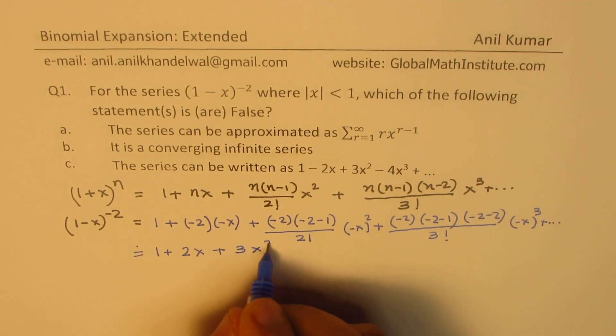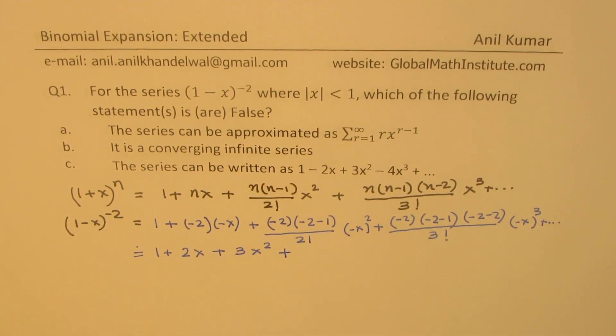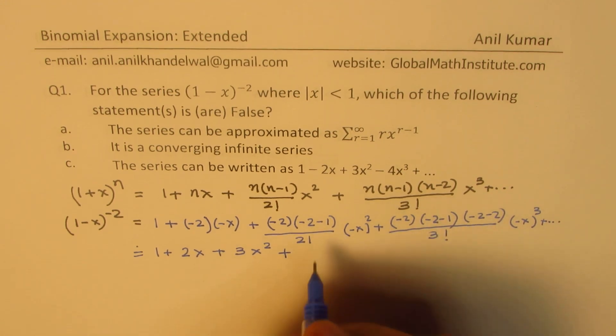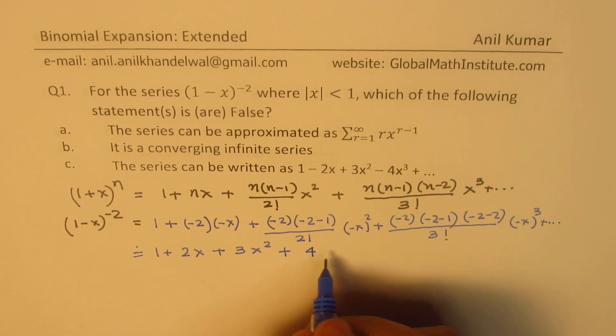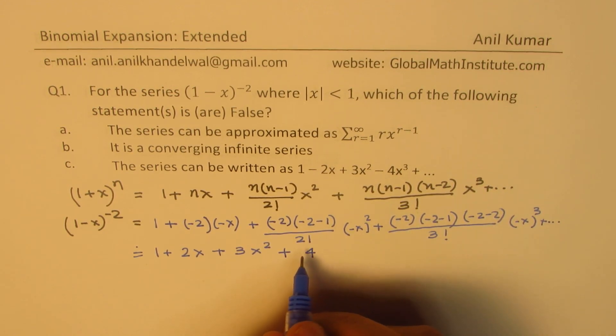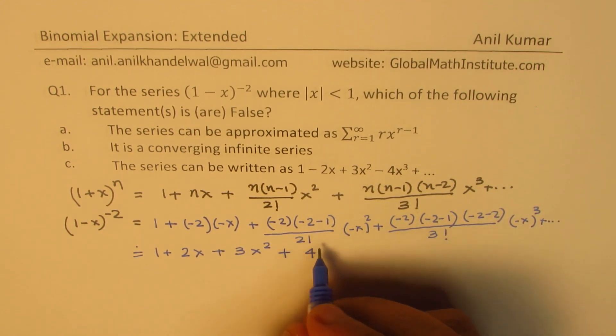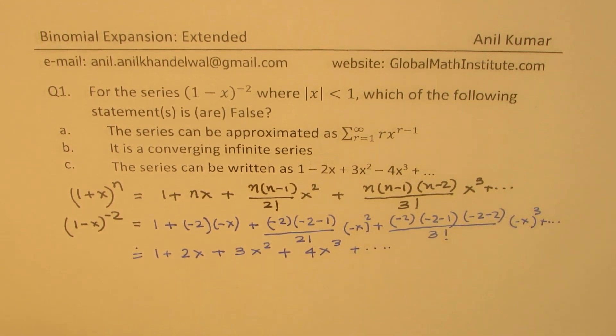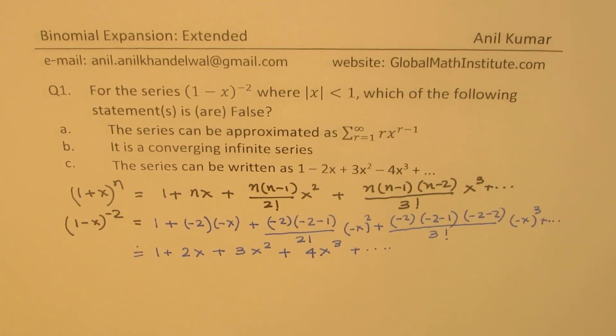So we get 3x² + the next term. 3! is 3×2, we have x³, 1, 2, 3, and 4 negative signs means positive. What we get here is 2×3×4. When you divide by 3, we get 4. So we get 4x³ and so on.